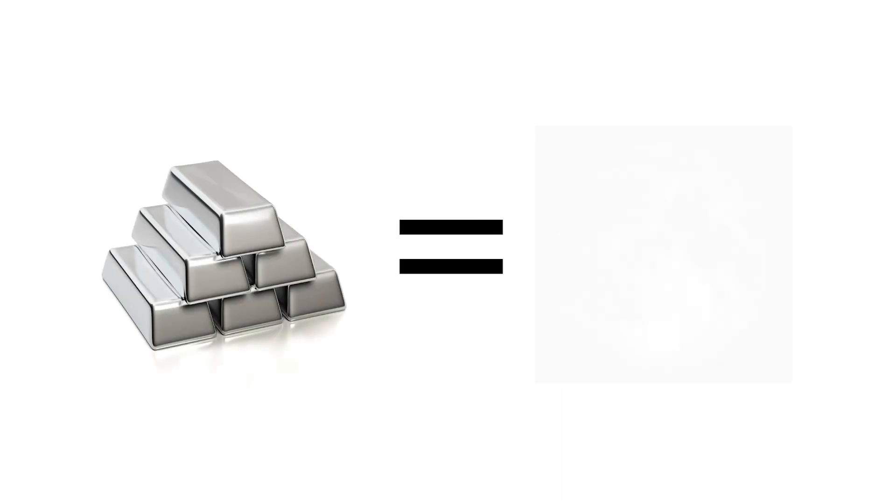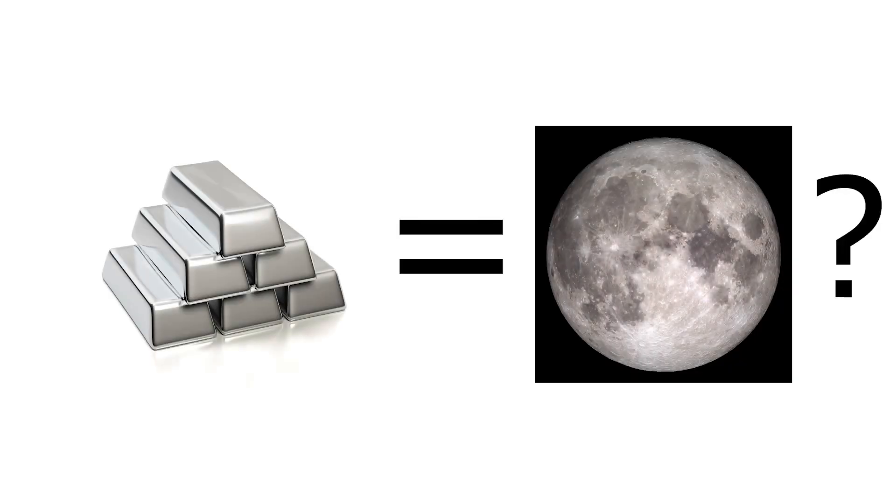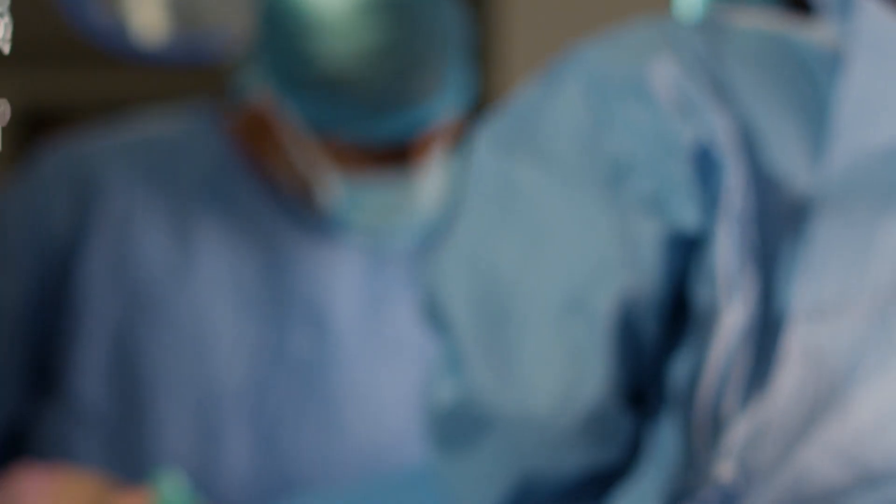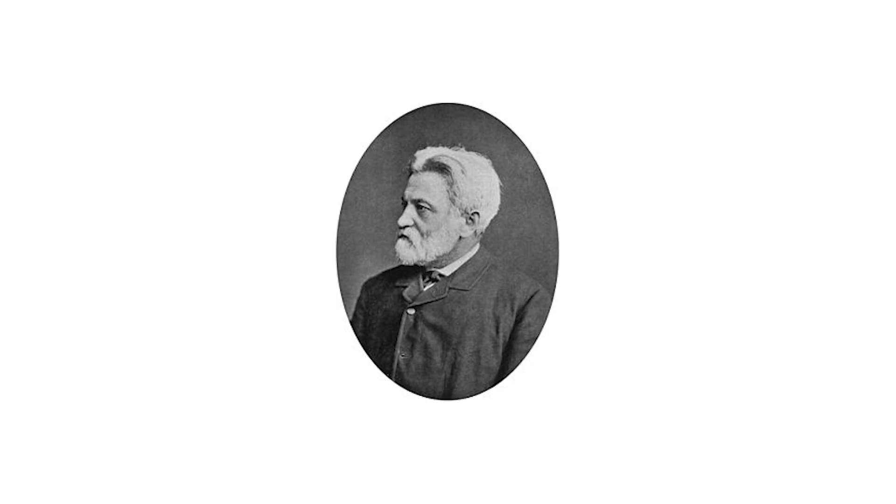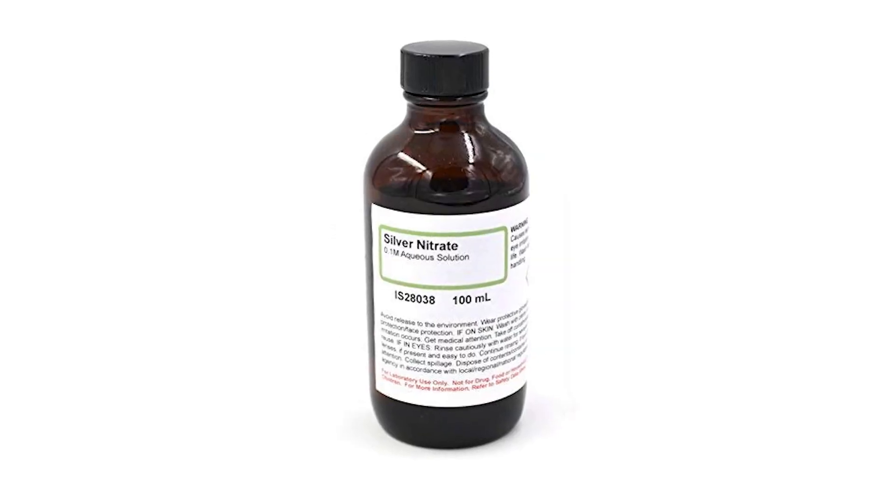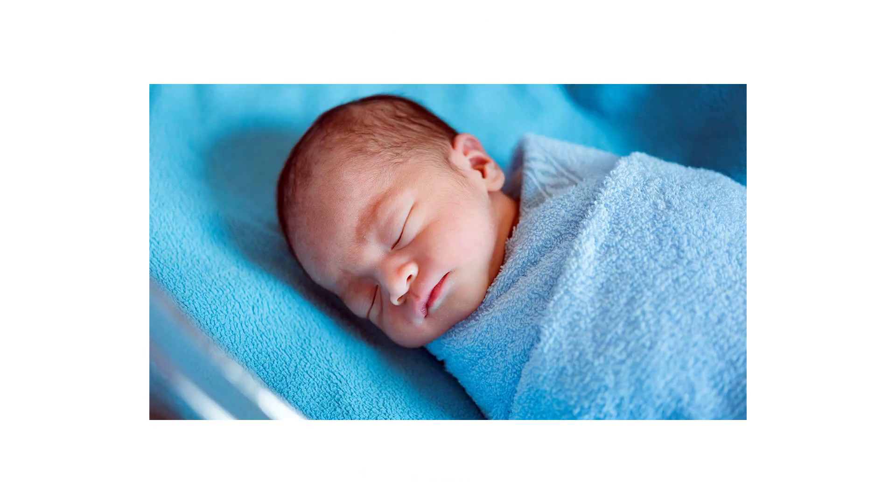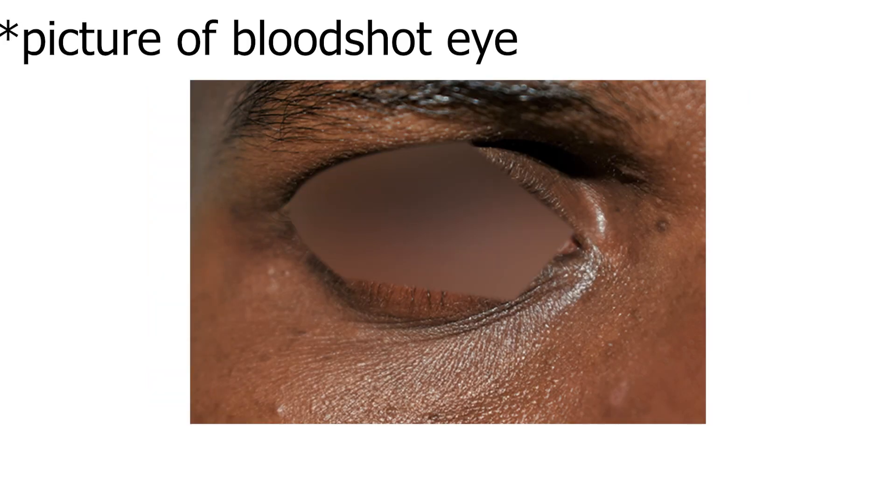It was once called lunar caustic because silver was called Luna by ancient alchemists who associated silver with the moon. Silver salts have antiseptic properties. In 1891, a gynecologist, Sigmund Kred, introduced the use of dilute solutions of silver nitrate in newborn babies' eyes to prevent them getting gonorrhea.